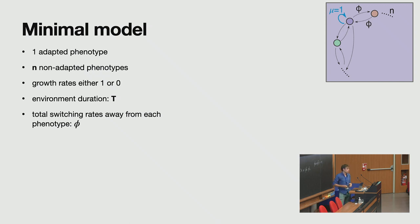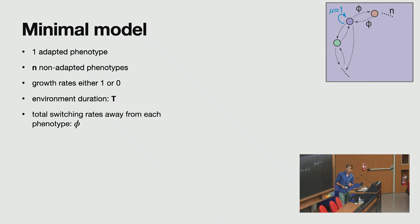Between the phenotypes, there's then a constant switching rate, phi. So this gives rise to some ordinary differential equations where I can kind of group all the non-adapted phenotypes into one group because they have the same dynamics anyhow. And so these are the SB, so it's bad, B is for bad, and the SG, so the good phenotypes.